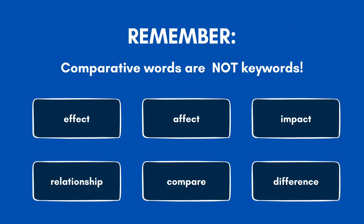Before we go, remember that comparative words like effect, affect, impact, relationship, and others are not keywords you should search for in a database. They just fill out your research question nicely to ensure you know exactly what information you are searching for within your research.